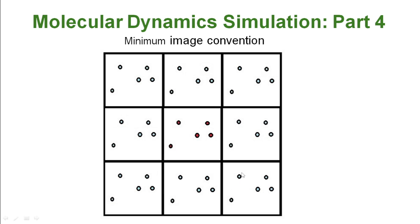We don't want this situation. Therefore, a method called minimum image convention is needed to avoid it. This minimum image convention method makes sure that each atom interacts with only one image of every other atom in the system.